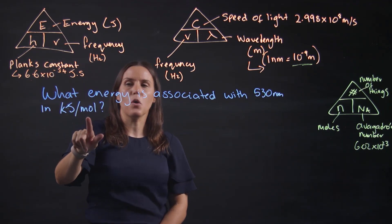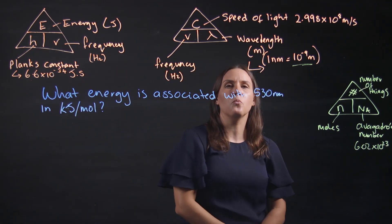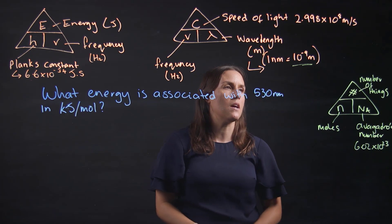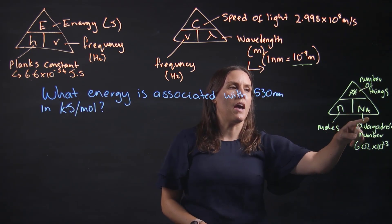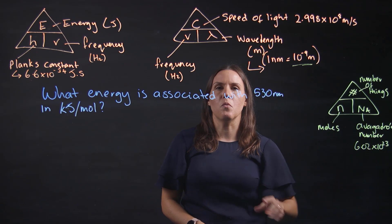And because we need it in per mole, we're going to be requiring Avogadro's number. So the number of things divided by Avogadro's number will give you the moles.